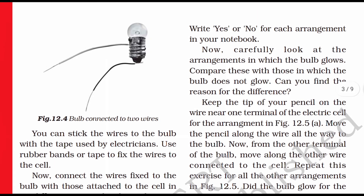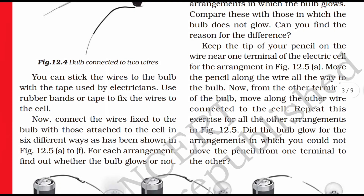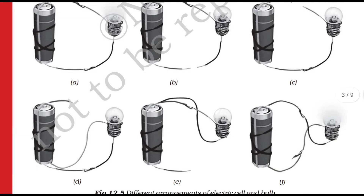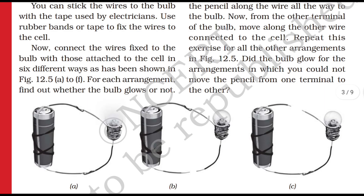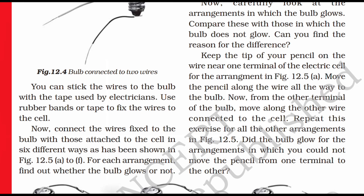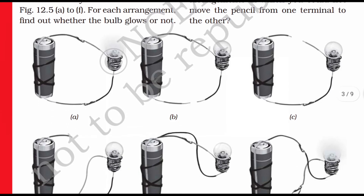Check which arrangement makes the bulb glow and write yes or no for each arrangement in your notebook. Carefully look at the arrangements in which the bulb glows and compare with those in which it does not. Keep the tip of your pencil on the wire near one terminal of the cell, move the pencil along the wire all the way to the bulb, then from the bulb move along the other wire back to the cell's other terminal. The bulb glows only in arrangements where you can trace a complete path from one terminal to the other without lifting the pencil.